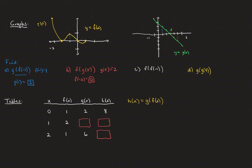Now we'll do f of f of negative 1. First we take −1 to the f function and that gives a positive 1. We plug that right back into the f function, and f(1) is 0.